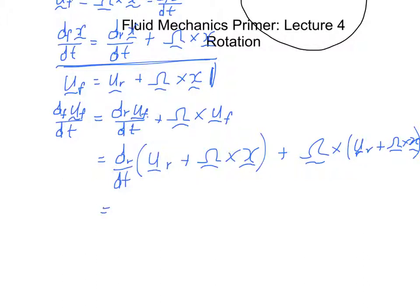So the next thing to do is pull out all the bits I want. One of the things I do want is dr ur/dt. Now, my rotation vector doesn't change with time, so I can pull omega out, and dr x/dt is just ur. And here, lo and behold, I've got another ur. Both of these terms give me ur, and they don't cancel—they add. And here I've got omega cross (omega cross x).